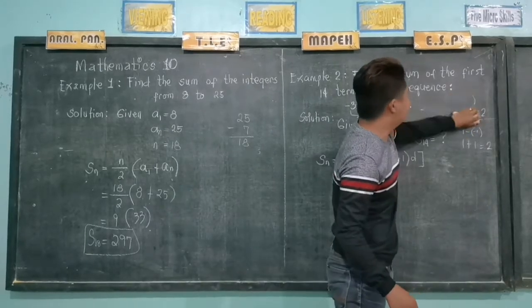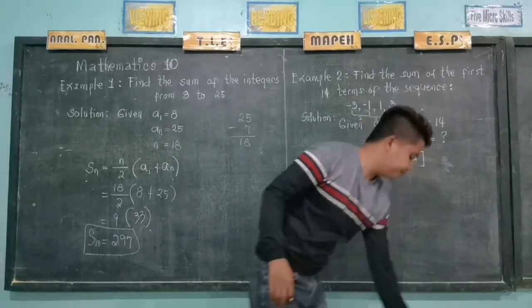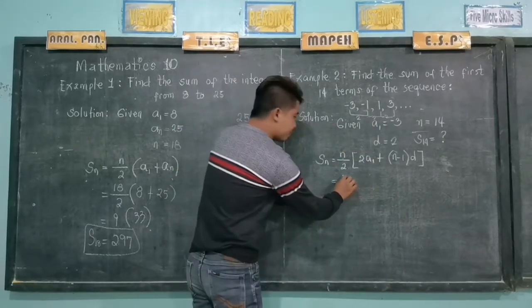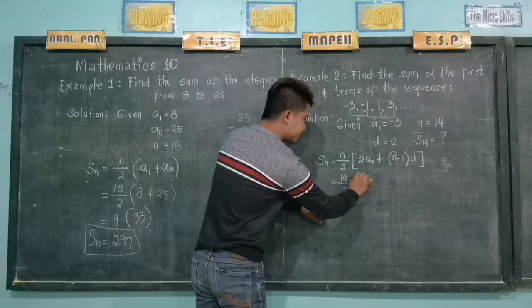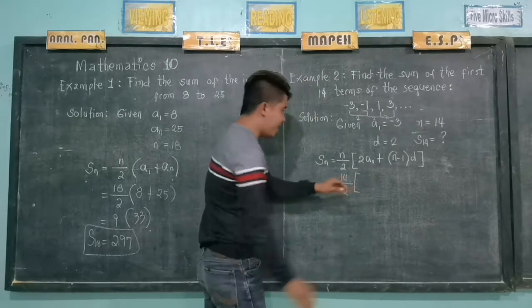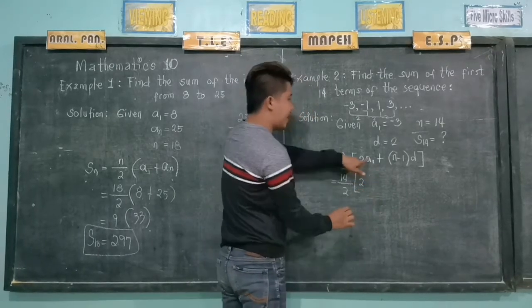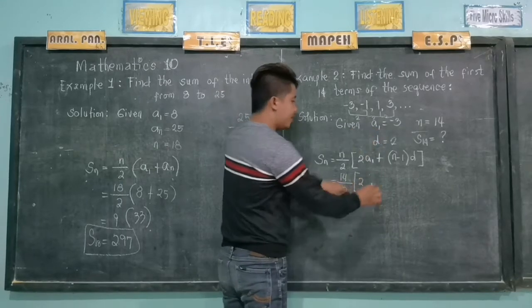We'll substitute the given values to the formula. So our n is 14 over 2, then we have 2 times a sub 1, negative 3.